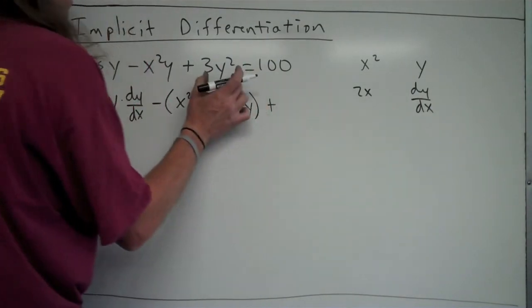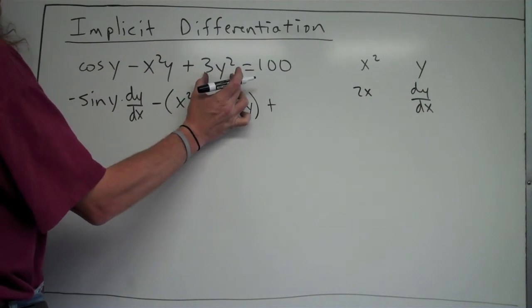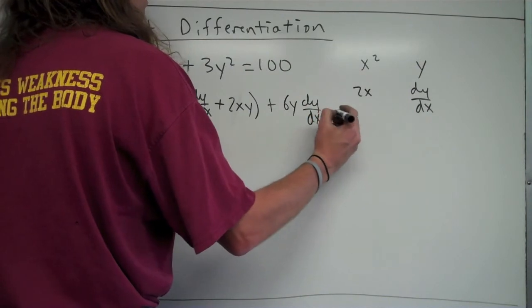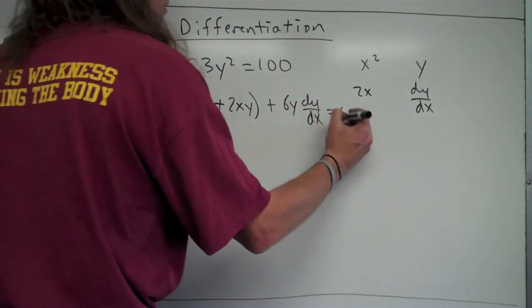And then plus, so then I'm going to just continue working on here, the derivative of 3y squared is 6y times dy over dx, and the derivative of 100 is just 0, just a constant.